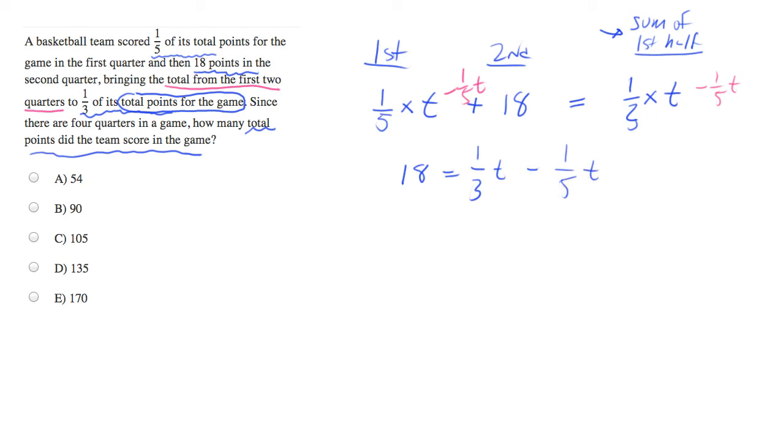And to make the subtraction I'm going to need a common denominator, so I'm going to multiply the left term by five over five and multiply the right term by three over three. I picked those numbers because they were the denominator of the other term. And I write out the next line, we get 18 equals five-fifteenths t minus three-fifteenths t, or 18 equals two-fifteenths t.